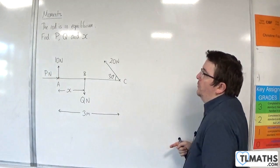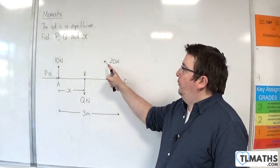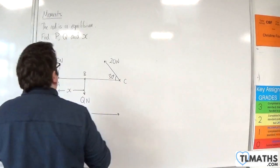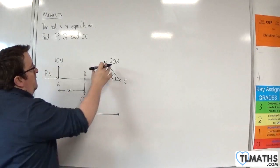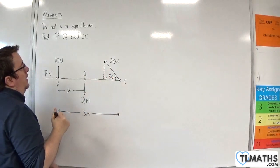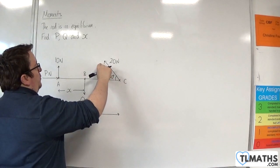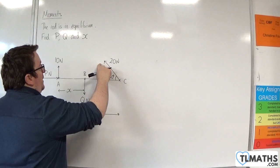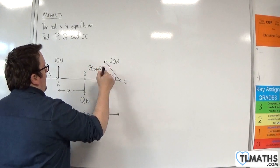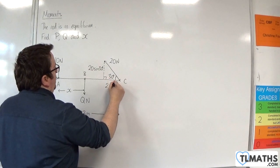The first thing that I would do is I would split this force up into its components. Now, you can do this in different ways, but I would naturally go for doing this. So we have the opposite side, which is going to be 20 sine 30, and we have the adjacent side, 20 cosine 30.